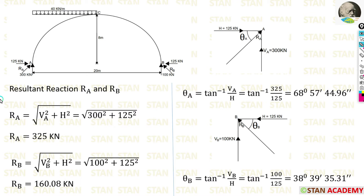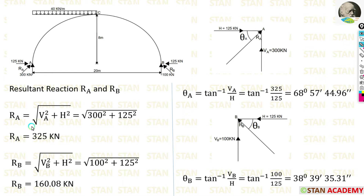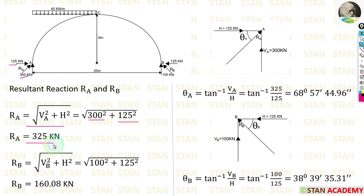Now we find the resultant reactions RA and RB. The resultant combines the horizontal thrust and vertical reaction. RA = √(VA² + H²) = √(300² + 125²) = 325 kN.